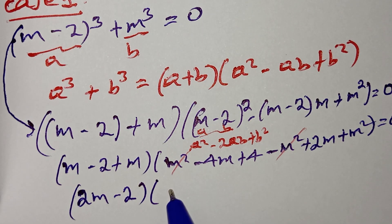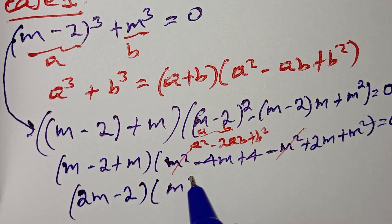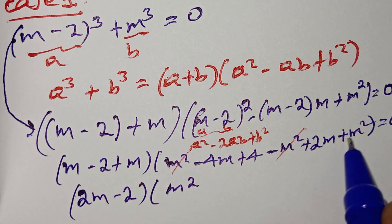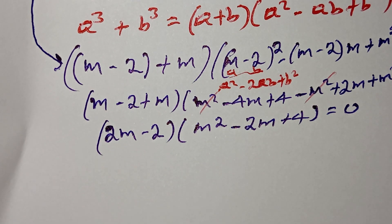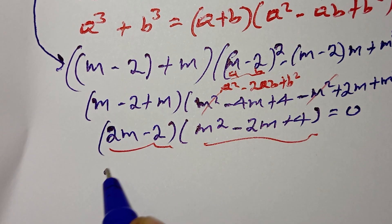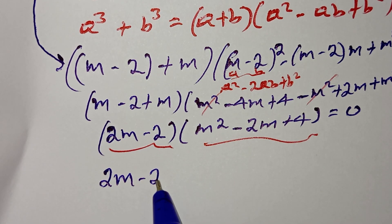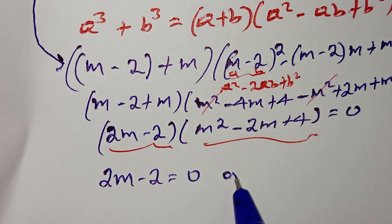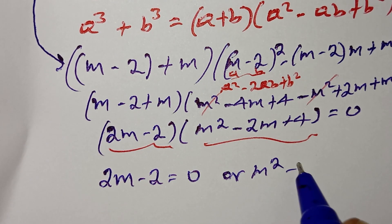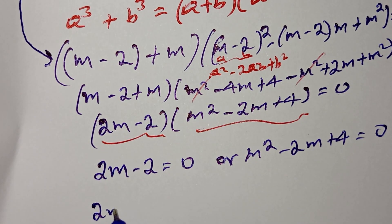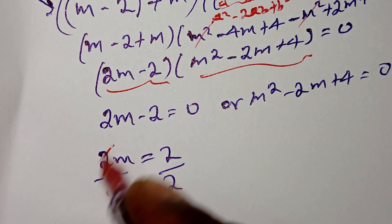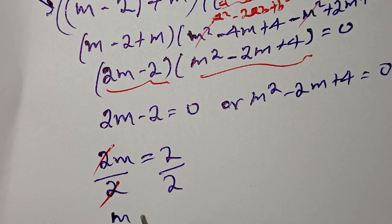Simplifying: the m² terms cancel, giving (2m minus 2) times (m² minus 2m plus 4) equals 0. So either 2m minus 2 equals 0, or m² minus 2m plus 4 equals 0. From the first: 2m equals 2, so m equals 1.